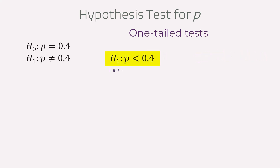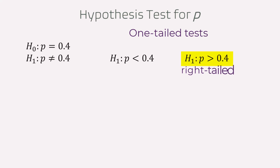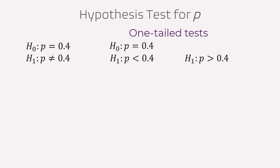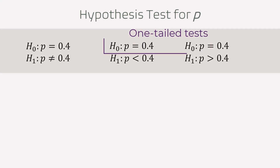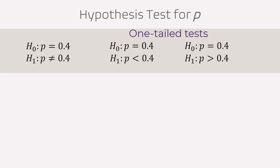This is an example of a lower or left-tailed test because the alternative has the less than sign. And this is for a right-tailed test because the alternative has the greater than sign. For one-tailed tests, some authors write the null hypothesis with a pure equality sign, while others use a sign in the opposite direction of the alternative hypothesis along with an equal sign.